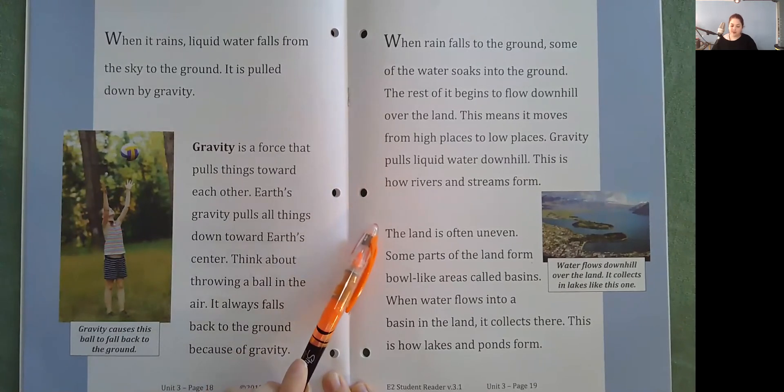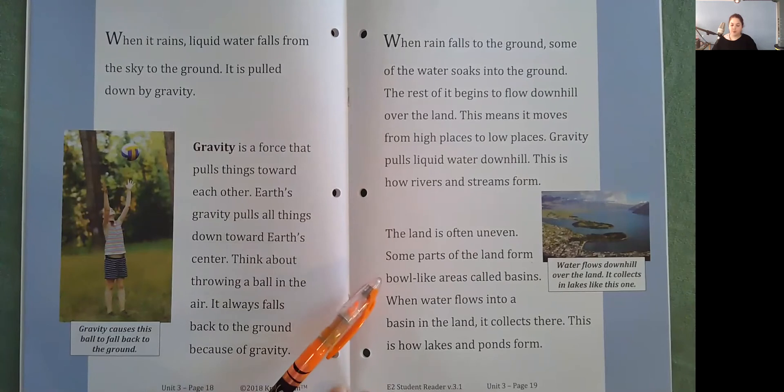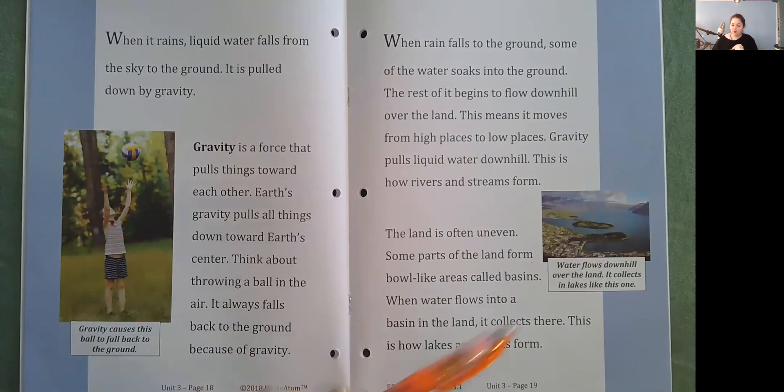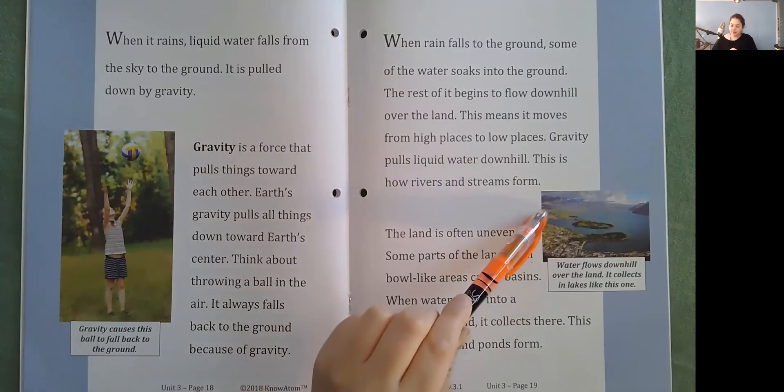The land is often uneven. Some parts of the land form bowl-like areas called basins. When water flows into a basin in the land, it collects there. This is how lakes and ponds form. Water flows downhill over the land. It collects in lakes like this one.